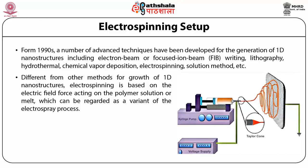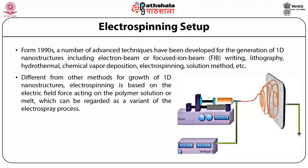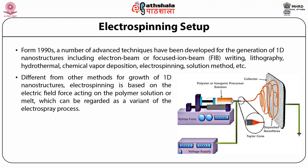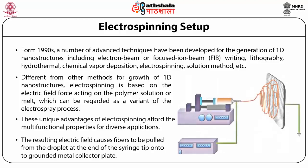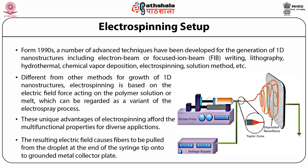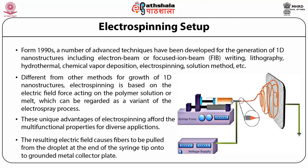In electro-spinning, solidified fibers can be achieved by stretching the electrified jet through electrostatic repulsions between the surface charges and the evaporation of solvent, as shown in the figure. This technique could be applied to synthetic natural polymers, polymer alloys, and polymers decorated with functional nanomaterials. These unique advantages of electro-spinning afford multi-functional properties for diverse applications.